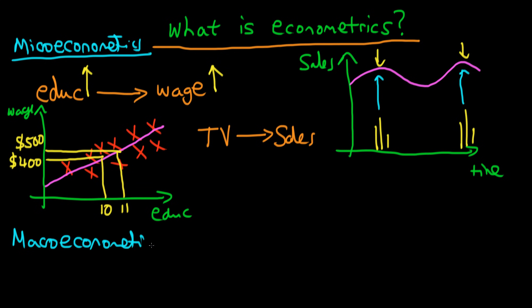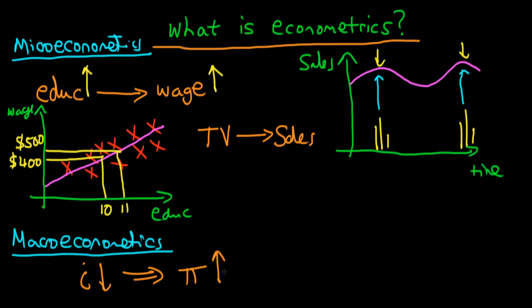Another type of econometrics is macro-econometrics. As its name suggests, it deals with macro relationships. An example here might be: what is the effect of interest rate falls on inflation? Traditional economic theory suggests that if the interest rate falls, then the inflation rate should increase because of increases in aggregate demand.